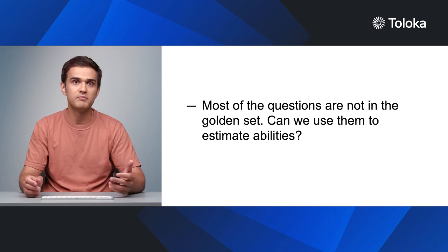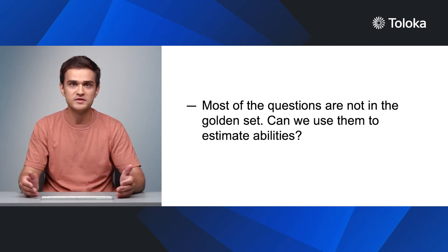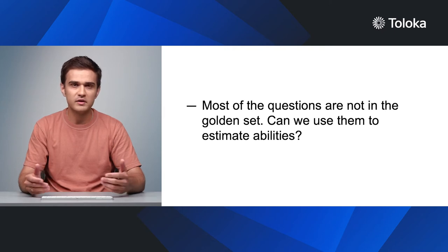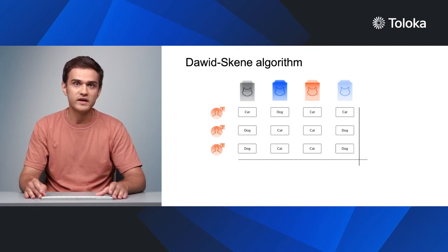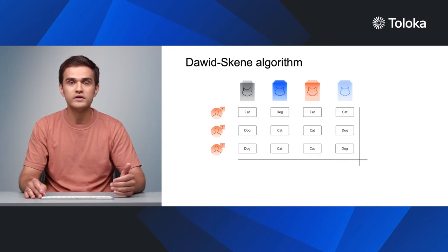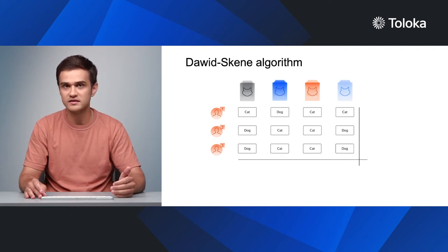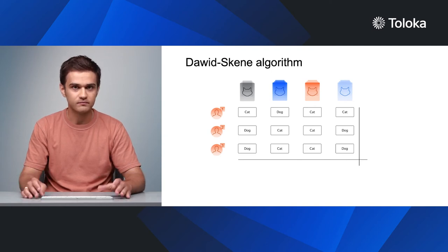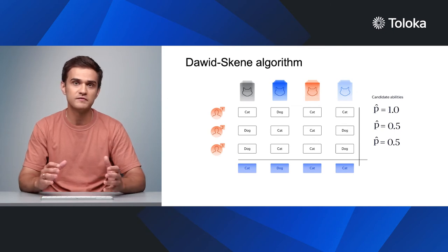We took into account that performers are different, but we only know the answers to a small number of questions, so our estimates of performers' abilities may be inaccurate. Can we do better and use questions without known answers to estimate the abilities of performers? Yes, we can. This method was proposed by researchers called Dawid and Skene. We have a small dataset with four images, and our goal is to classify each image as a cat or a dog. We recruit three performers and each labels all four images. In this example, we don't have any control tasks — so how will we aggregate the responses? The Dawid-Skene method simultaneously finds answers to the questions and performers' skills that agree with the observed data the most.